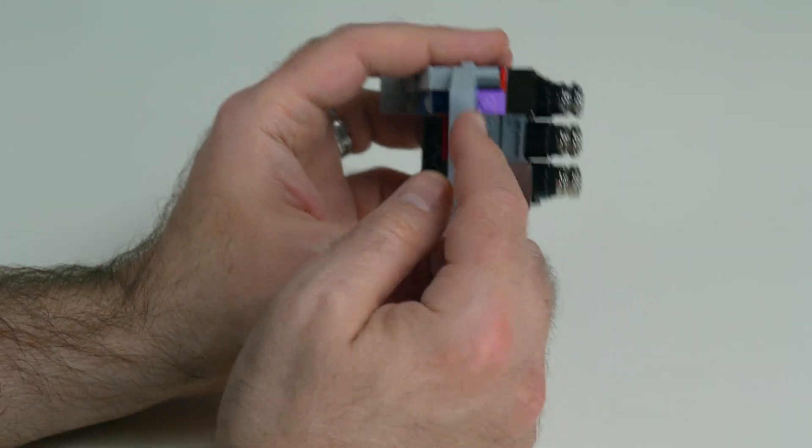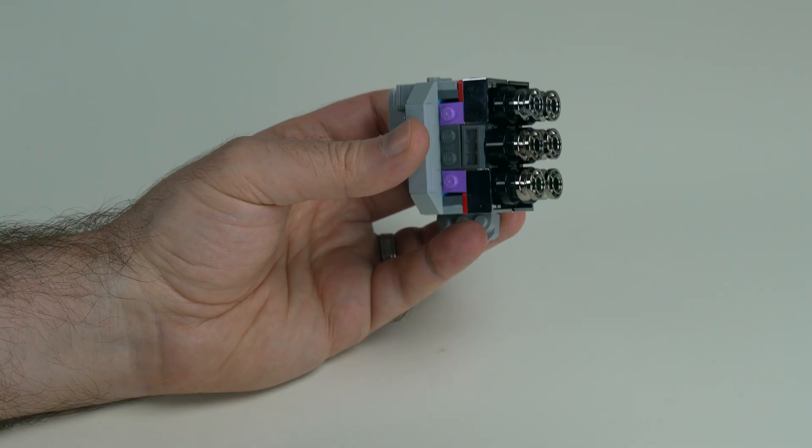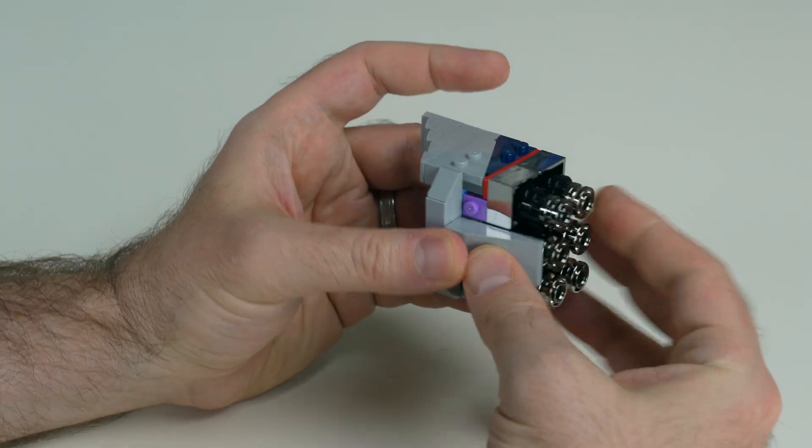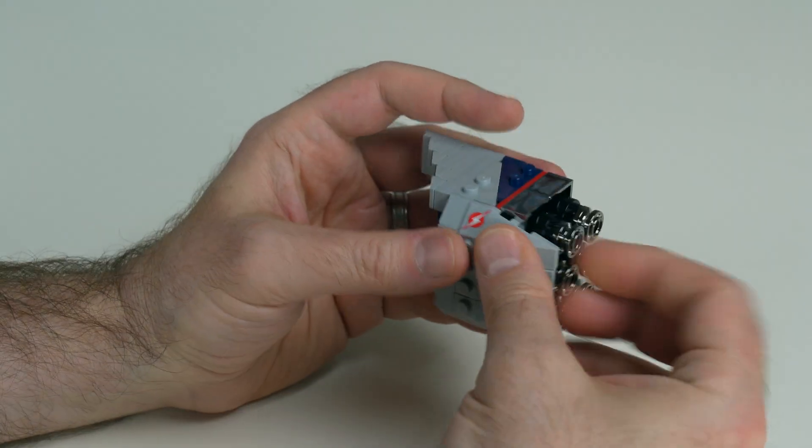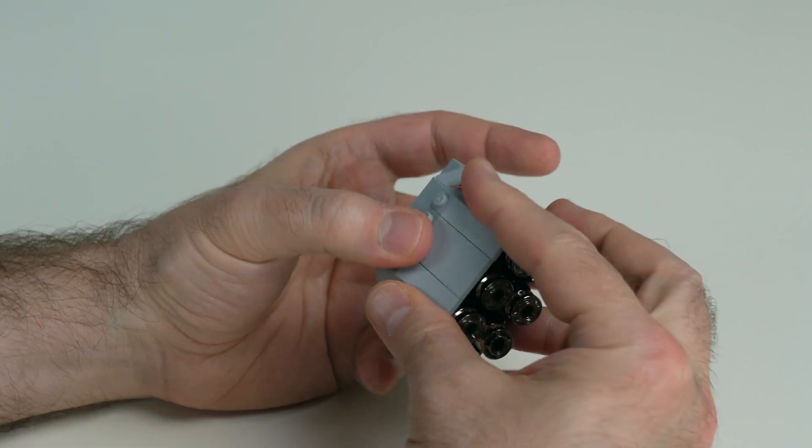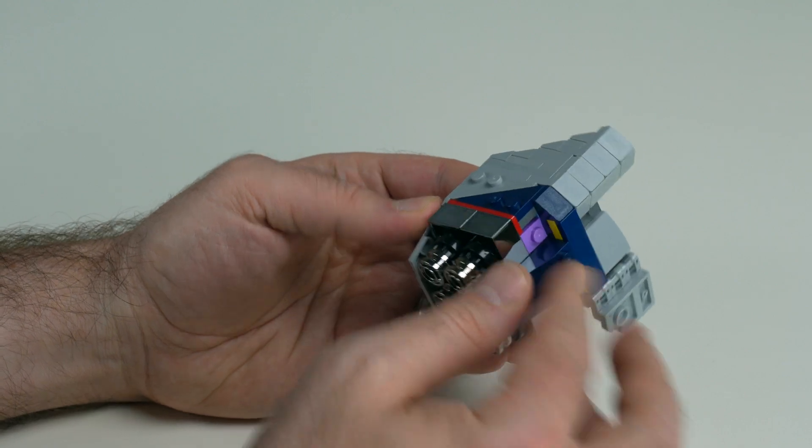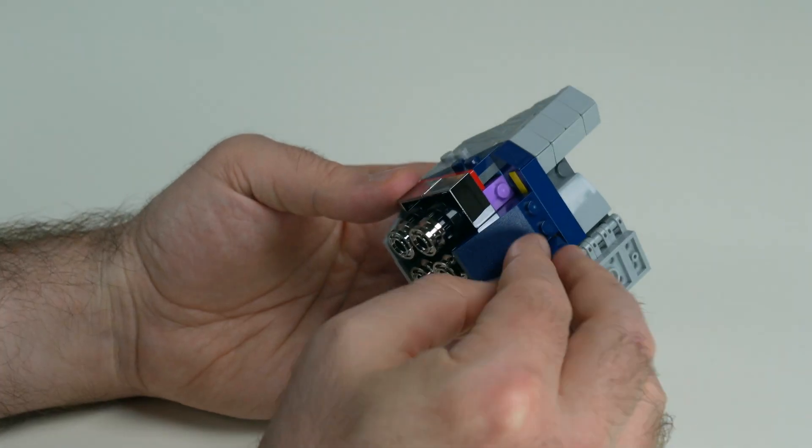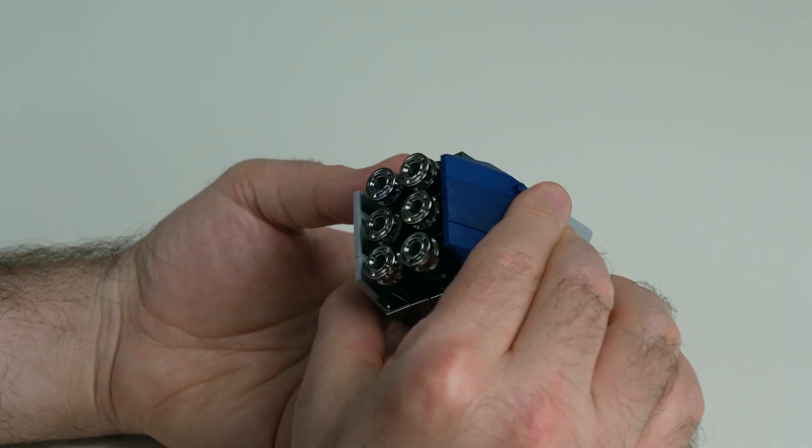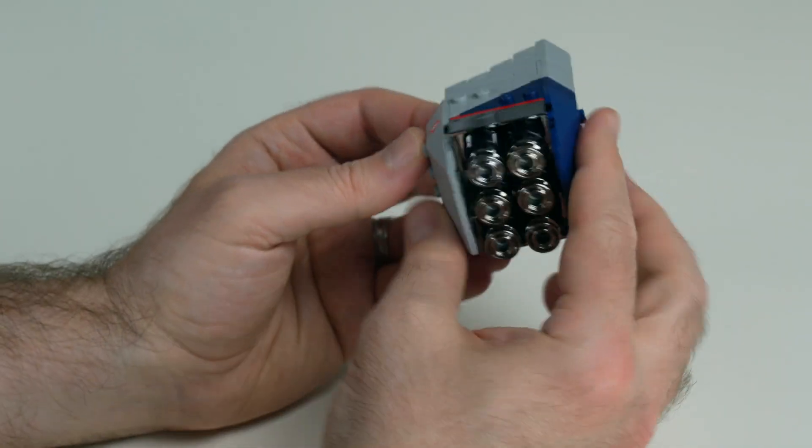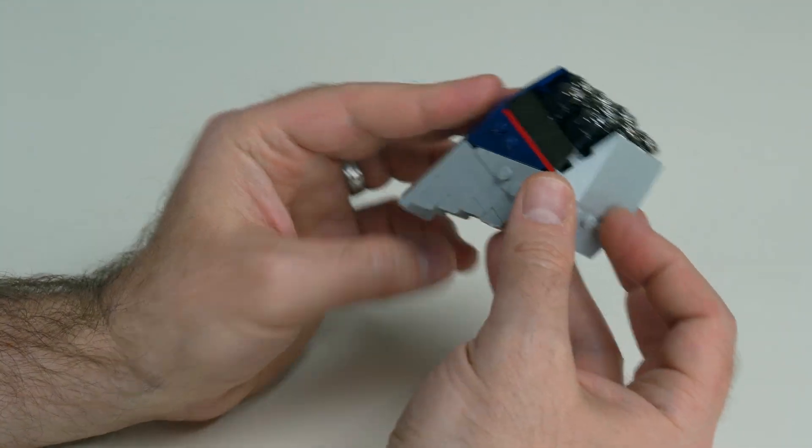And then finally, these studs on each side then will allow us to connect in the final bits of the shaping. So 18 degree slopes and some wedges. One side and then dark blue on the other side. So that's what our engines look like.